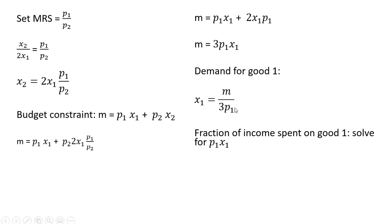Solving this gives us p₁x₁ = m/3. So total spending on good 1 equals one-third of money income.